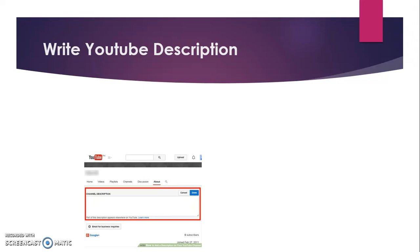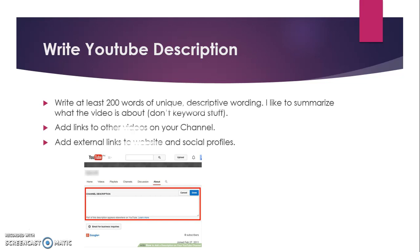Now I will discuss writing the YouTube description. You have to write at least 200 words of unique descriptive wording, summarizing what the video is all about. It is important that you should not stuff keywords in your video description. You have to add links to other videos on your channel, as well as external links to your website and social profiles.